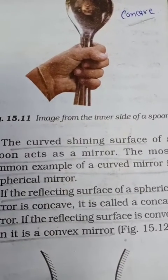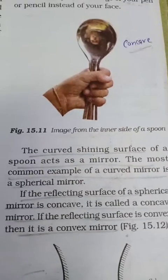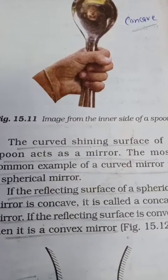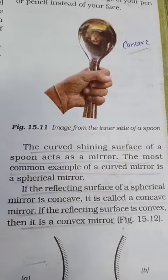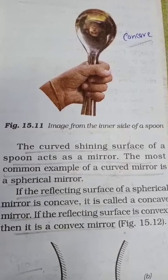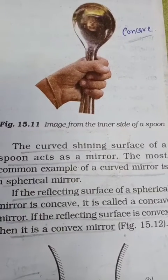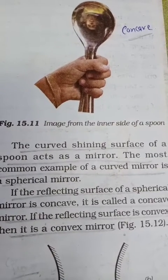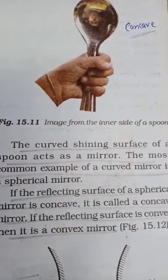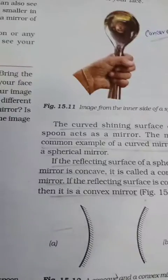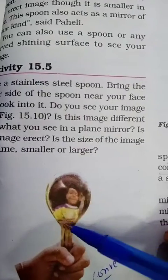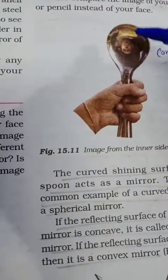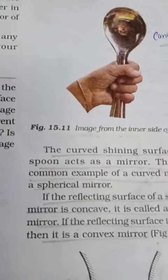These curved shining surfaces of the spoon act like mirrors. The most common example of a curved mirror is a spherical mirror. Some mirrors have a curve in them, just like the spoon — we call these curved mirrors.